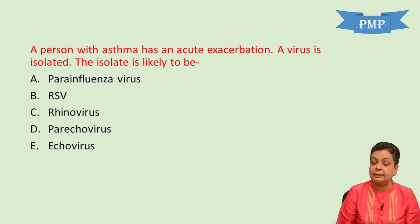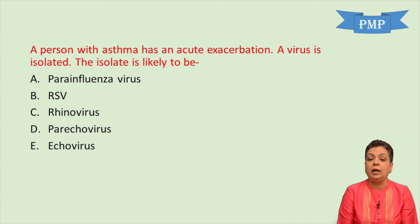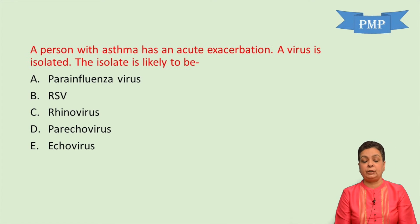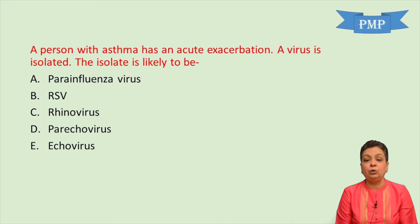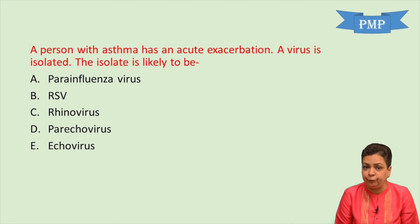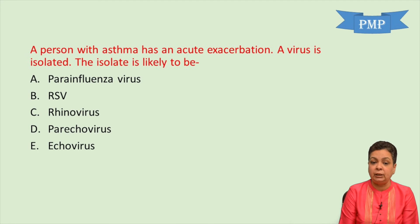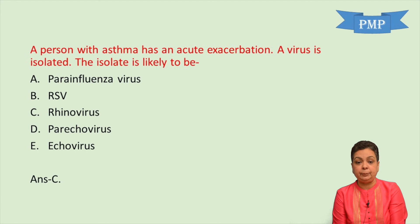MCQ: A person with asthma has an acute exacerbation and a virus is isolated. Which is the likely isolate? Rhinoviruses are responsible for 50% of exacerbations of asthma, so the answer is rhinovirus.